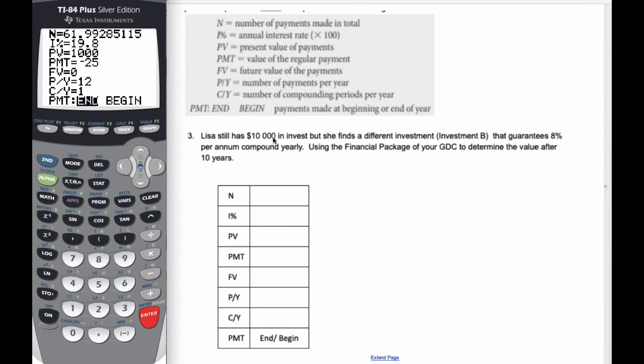Lisa's going to invest $10,000 at 8% compounded per year, and she's going to do it for 10 years. So when we go through it...